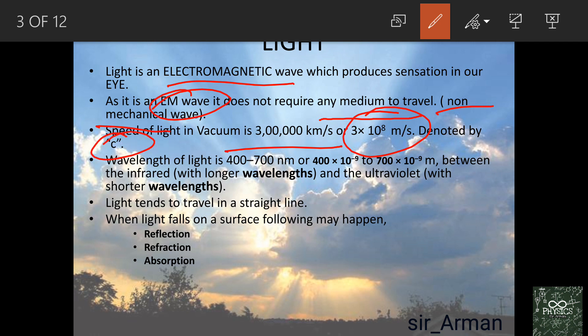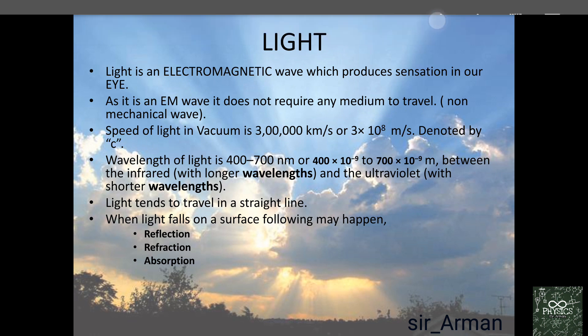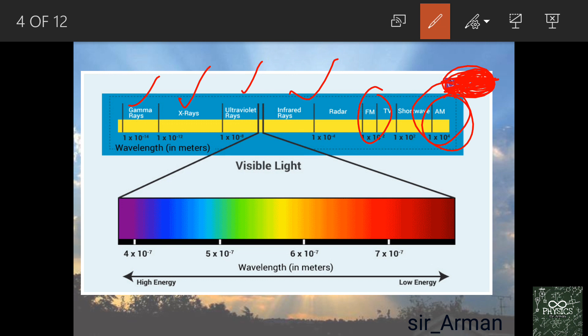The speed of light is denoted by the letter c. Since light is a wave, it has its own wavelength. Other electromagnetic waves include X-rays, gamma rays, ultraviolet rays, infrared, radar, TV, short wave, and amplitude modulation waves used in FM radio.